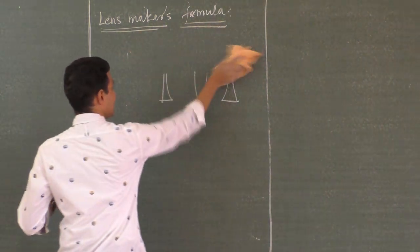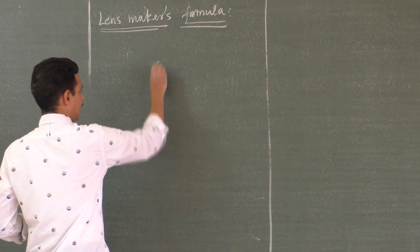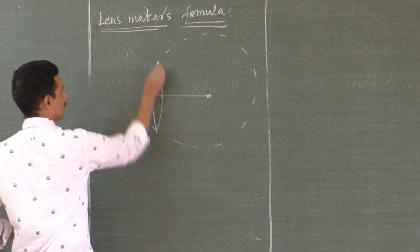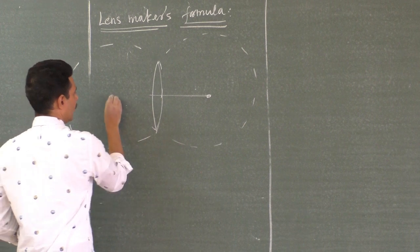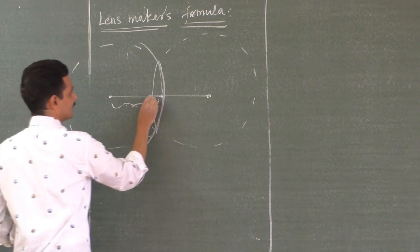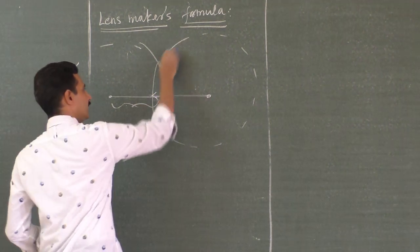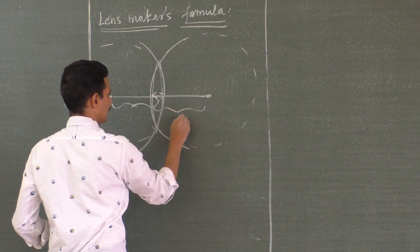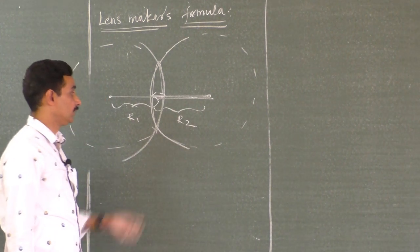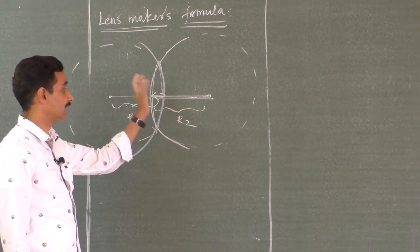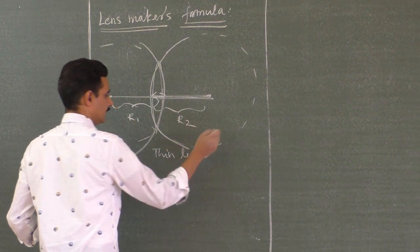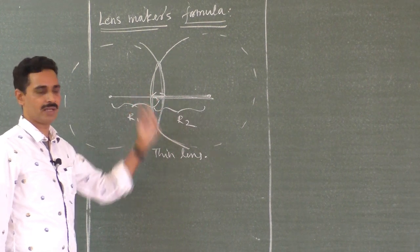What is a thin lens? Suppose you have a lens like this — one surface is part of a sphere with its center here, another surface is part of a sphere with its center here. Compared to the radius of each surface, the thickness of the lens is very small. So if the thickness of the lens is very small compared to the radii of curvature, then it is called a thin lens. A thin lens is one whose thickness is very small compared to the radii of curvature.